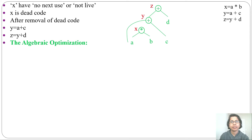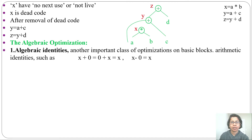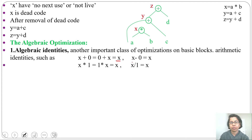In the previous lecture I discussed local common sub-expression elimination and dead code elimination. Let's discuss algebraic optimization. Algebraic optimization is using algebraic identities to simplify expressions. For example, x plus 0 or 0 plus x can be written as x; x minus 0 equals x; x multiplied by 1 or 1 multiplied by x equals x; x divided by 1 equals x. In a basic block, if a three-address statement contains x multiplication 1, we can simply write it as x.